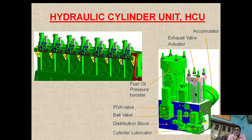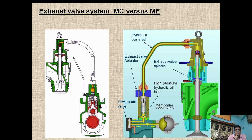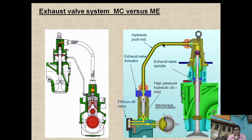Now let's look at the exhaust valve. The camshaft and roller arrangement has also been replaced with a hydraulic actuator, which is controlled by the FIVA valve. This FIVA valve gets the signal from the CCU through channel 17, and the CCU gets the signal from the ECU. Basically, the servo oil is moving the hydraulic actuator unit and pressurizing the oil, which is collected on top from the loop valve system. It is pressurized by the servo oil and fed for hydraulic activation through the hydraulic push rod to the hydraulic actuator.